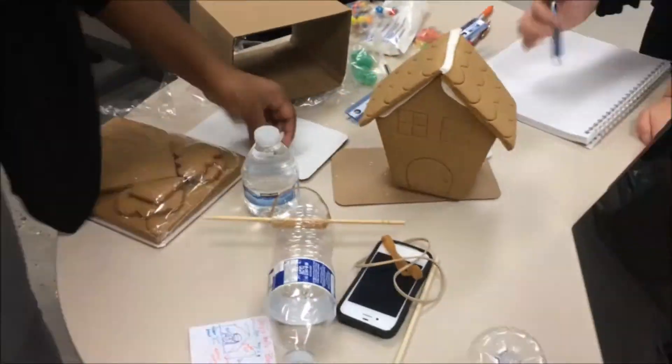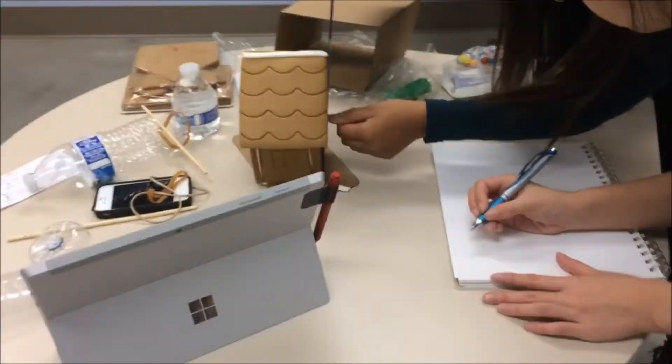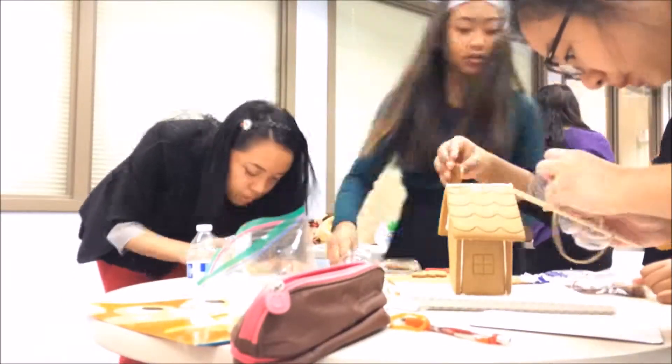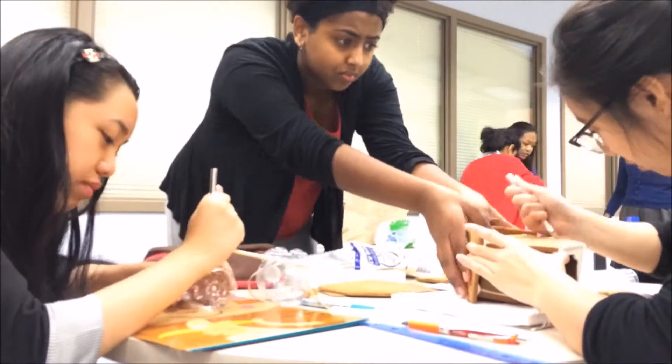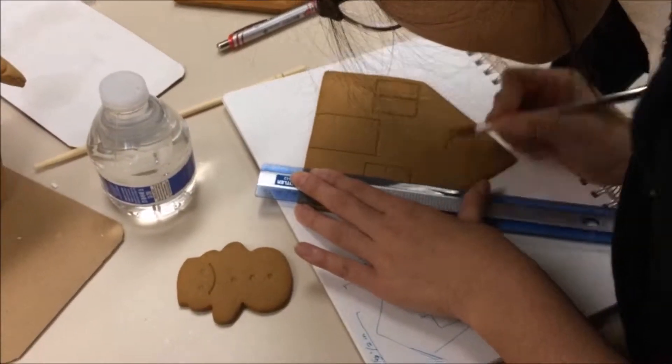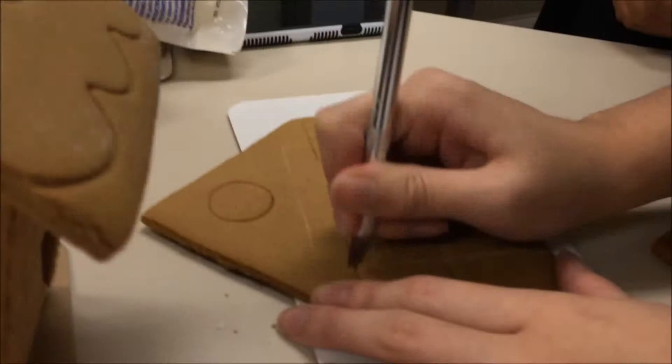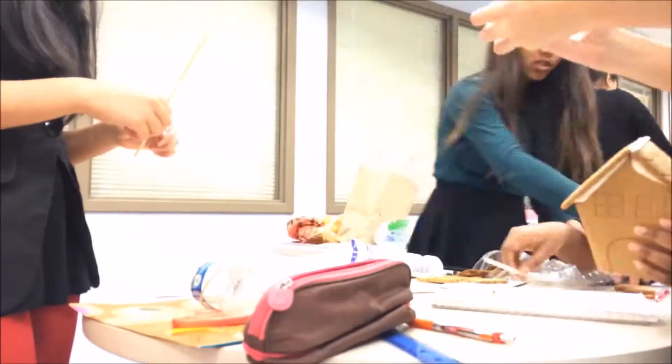On December 4th, we were given one and a half hours to build. In our case, most of the time was spent on assembling the trap and trying to cut an opening in the gingerbread house for the trap to be placed into. Unfortunately, some pieces broke along the way, but ultimately, we were able to accurately complete the task.